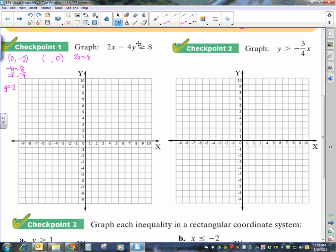Then, if I put in 0 for y, that goes away. And I'm left with 2x equals 8. Remember, we replaced that with an equal sign. That's why I have equals in both of these. Divide both sides by 2. And you find out that x equals 4. So, I have the point 4, 0.